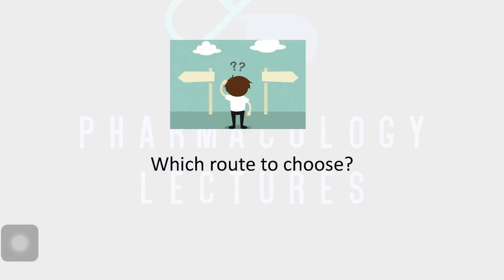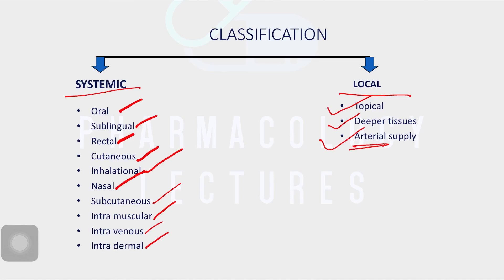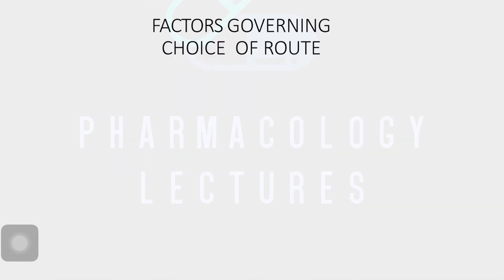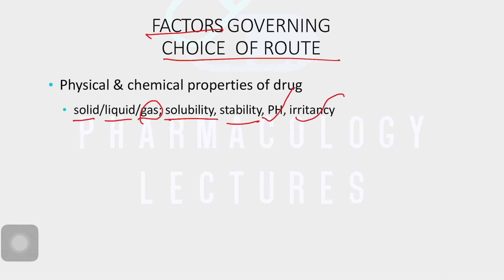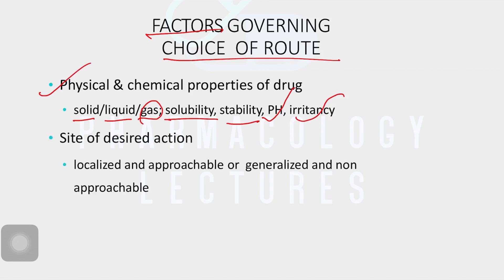Now, how do you choose which route to use? The choice depends on different factors. The first factor is the physical and chemical properties of the drug — what form the drug is in (solid, liquid, or gaseous), its solubility, stability, pH, and irritant properties. All these are important when choosing a particular route.